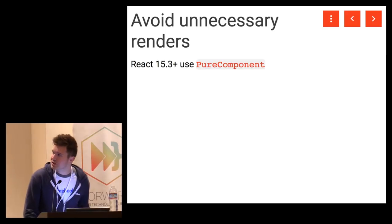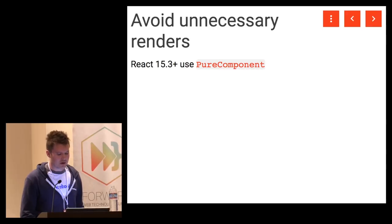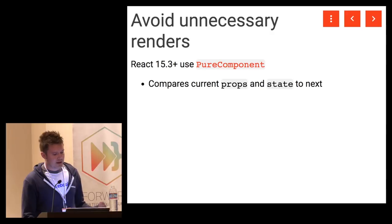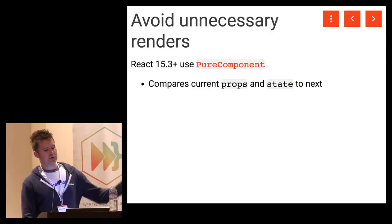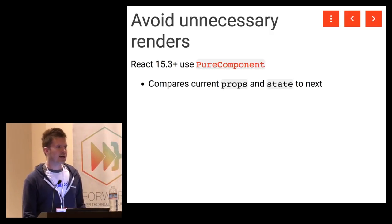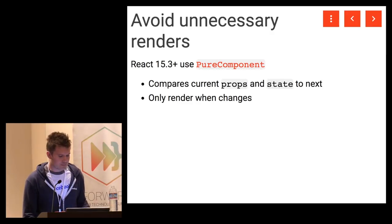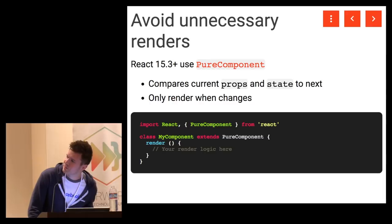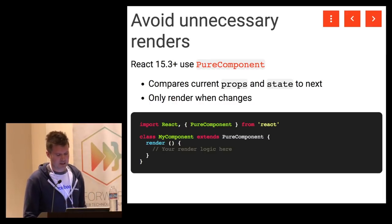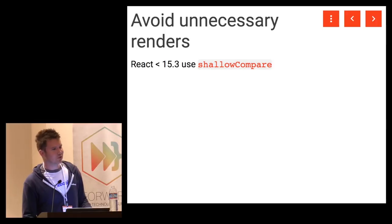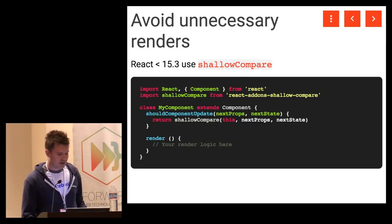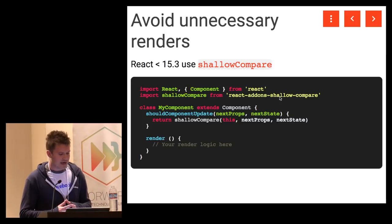We make it really easy to use. If you're using React 15.3 or newer, there's a component called PureComponent that does a shallow comparison of the current props and state to the incoming props and state — if they're equal, it skips render. You use it just like Component. If you're using React 15.2 or older, there's a utility called shallowCompare that works the same way, except you return it from within your shouldComponentUpdate. Both do a shallow comparison, and this can have a very big impact on performance.